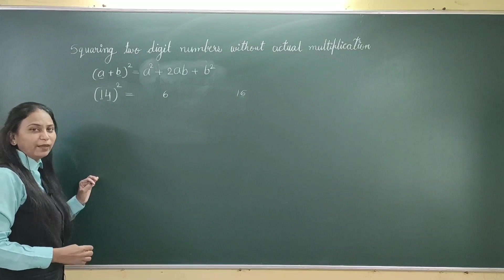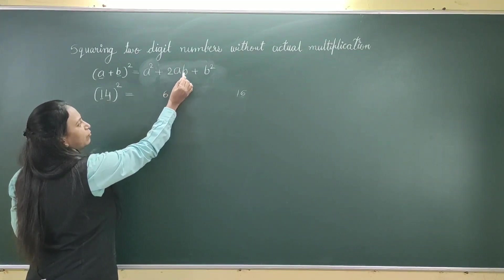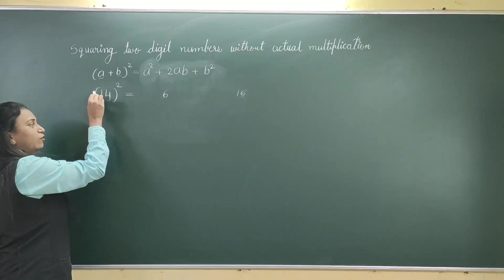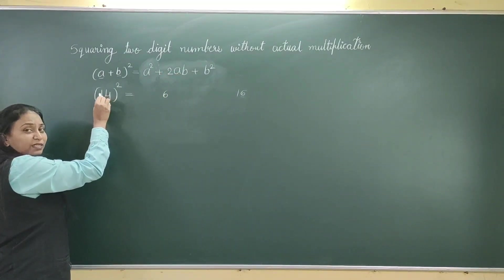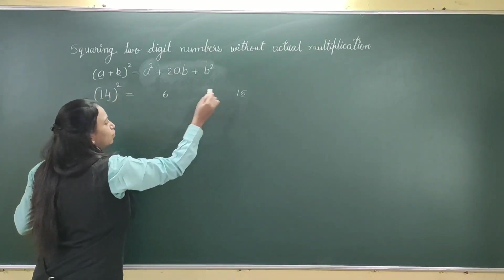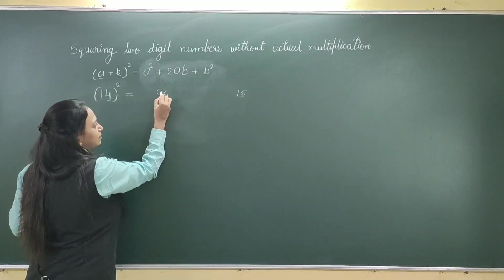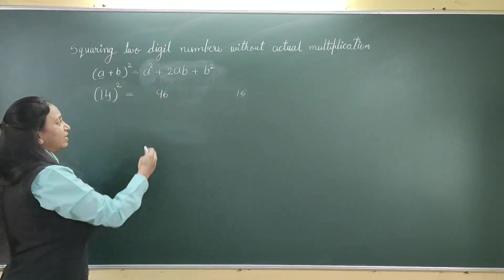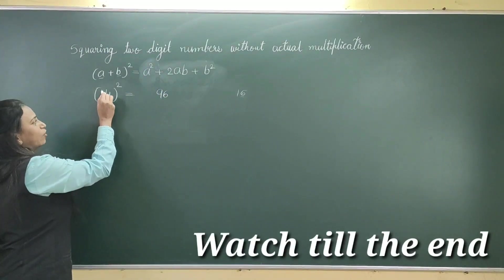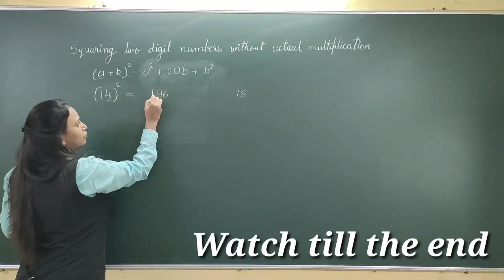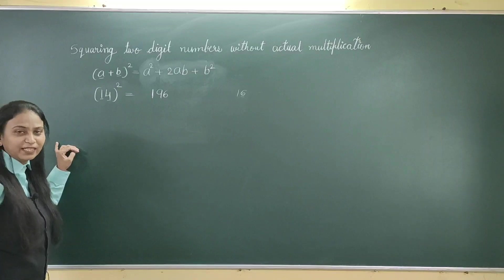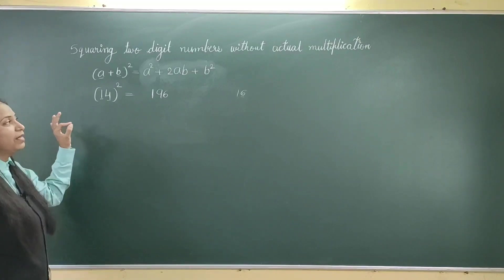The middle term is 2ab, which is multiplication of both terms into 2. That is 4 × 1 × 2. So, 4 × 1 = 4, × 2 = 8. 8 plus the carry 1 = 9. And the last term is a². Square of 1 is 1. So, square of 14 is 196, and you can verify this calculation by actual multiplication also.